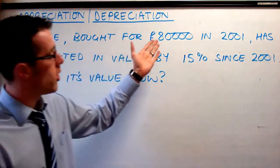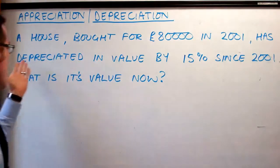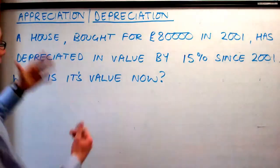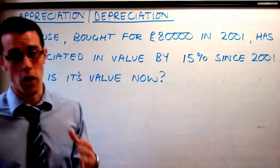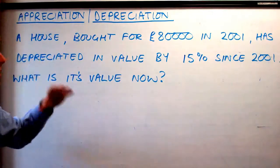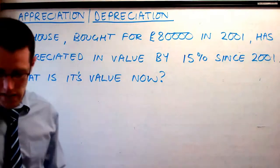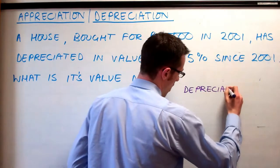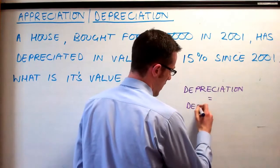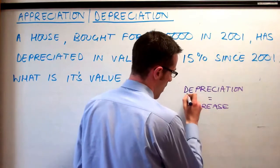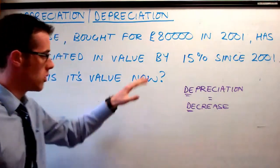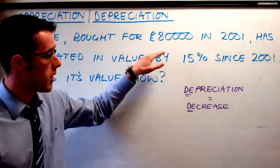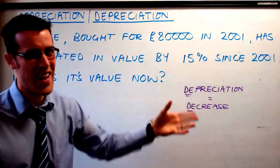If you look at this: a house which was bought for £80,000 in 2001 has depreciated in value by 15% since 2001 — what is its value now? The first thing is to understand the question. Appreciation means the value goes up over time; depreciation means it goes down. I always remember it as depreciation is a decrease. So the house is worth £80,000 and it depreciates — decreases in value — by 15%. We're going to find 15% of £80,000 and then take that off.